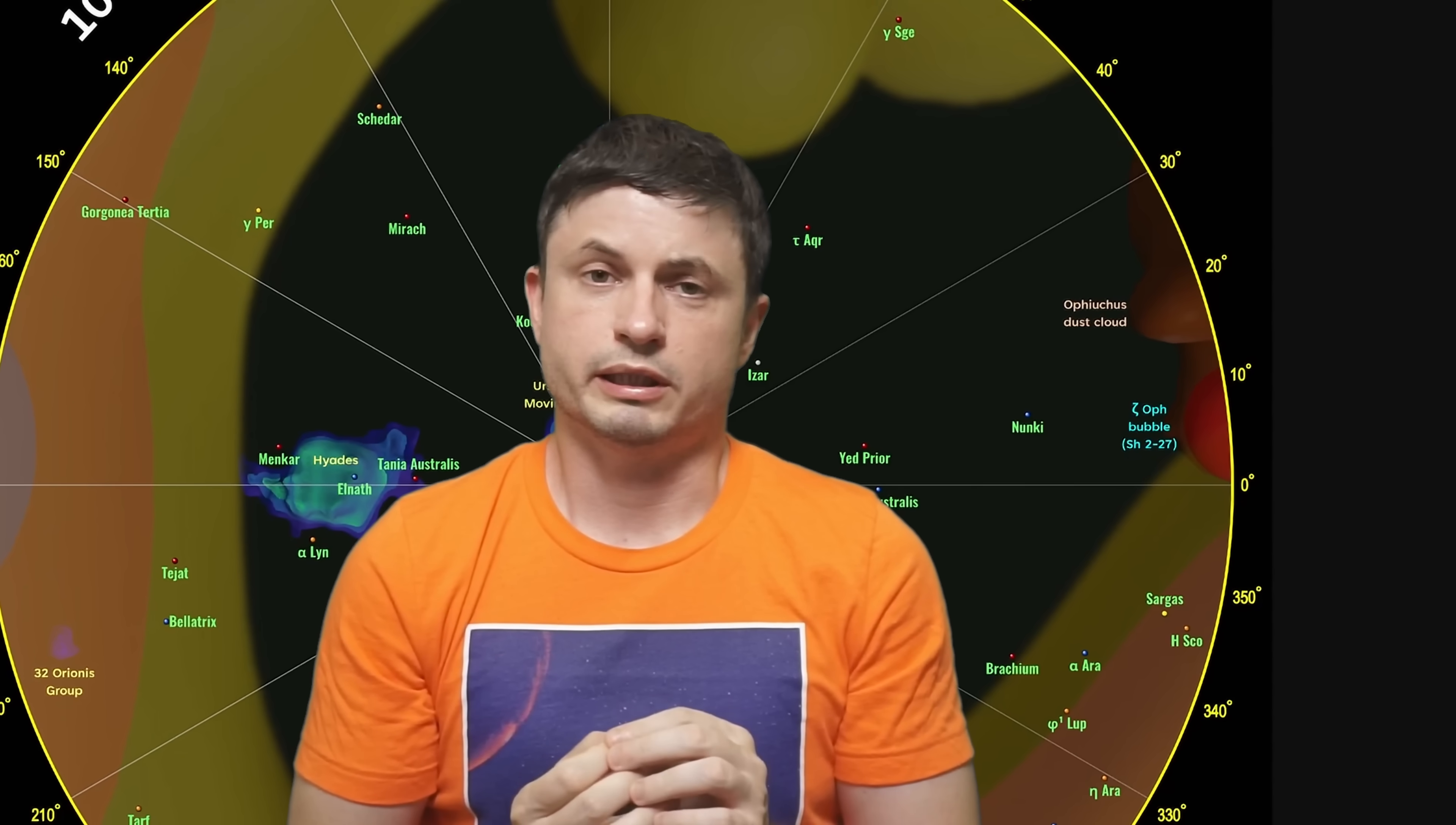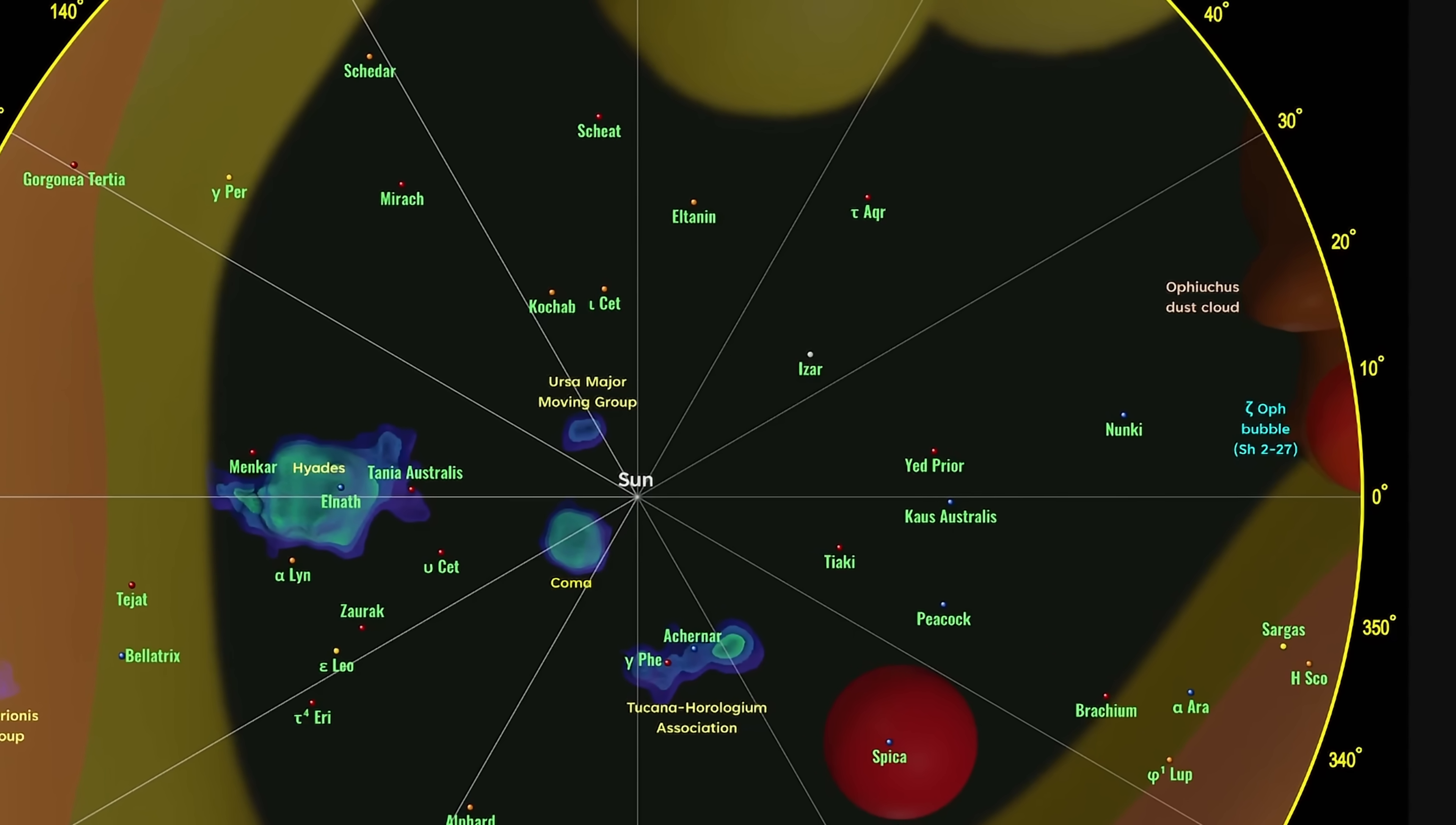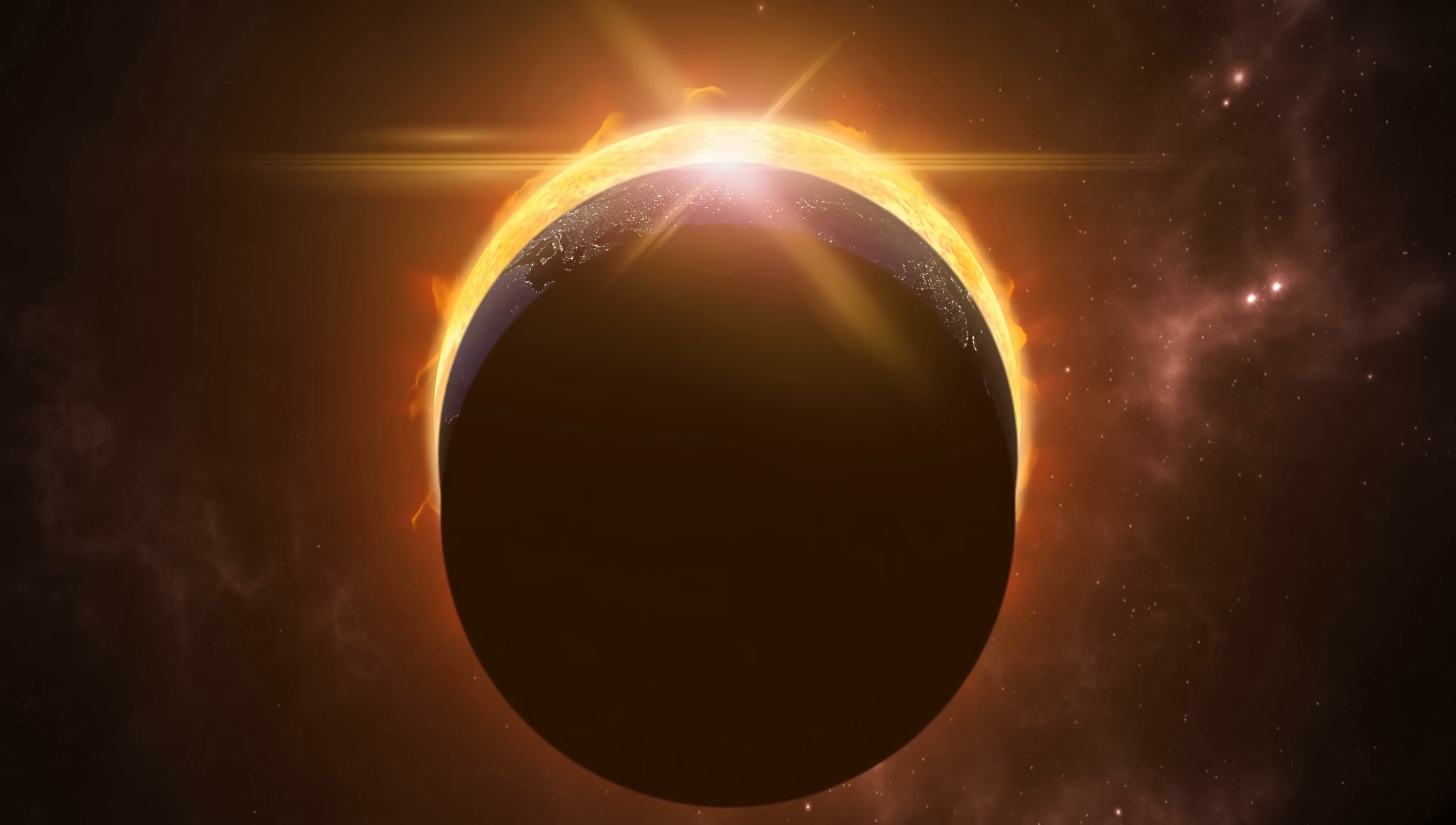Though it may seem somewhat unimportant, it actually is important based on a lot of recent discoveries. For example, here is a map we've discussed previously of what's known as the local bubble. This is a huge region of space, thousands of light years across, formed by various supernovae near the Sun. Inside this bubble we also have a bunch of clouds and even a bunch of really powerful stars forming their own regions, all of which potentially have a lot of effect on the entire solar system.